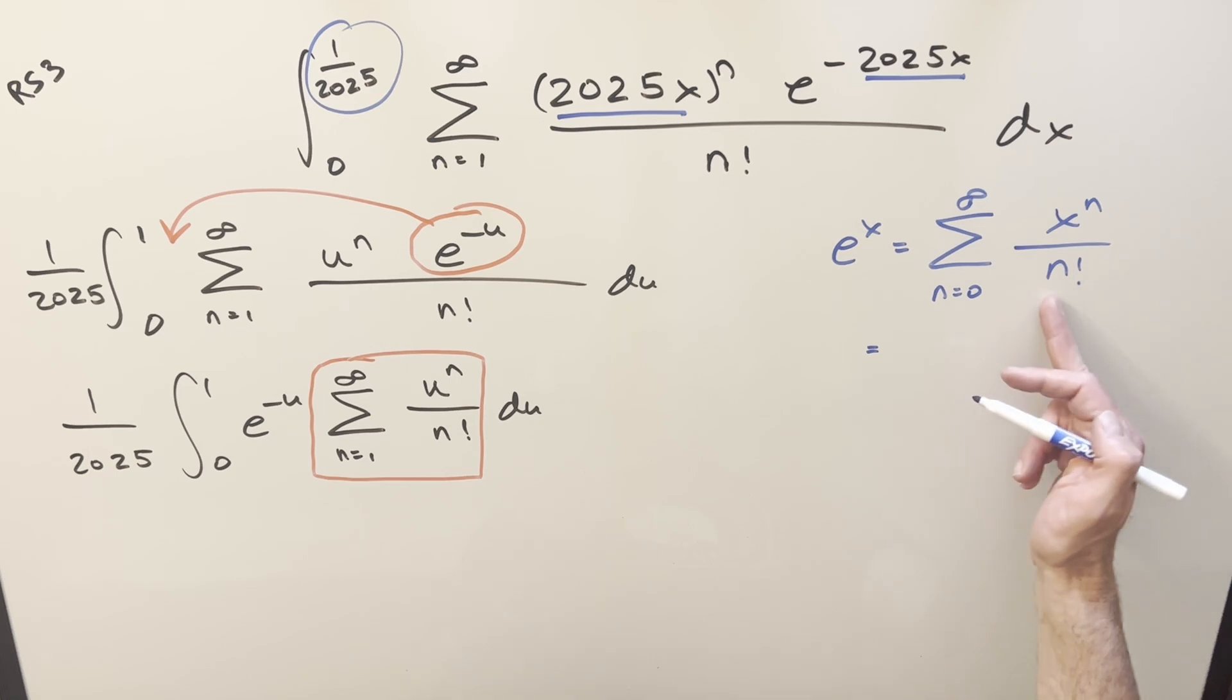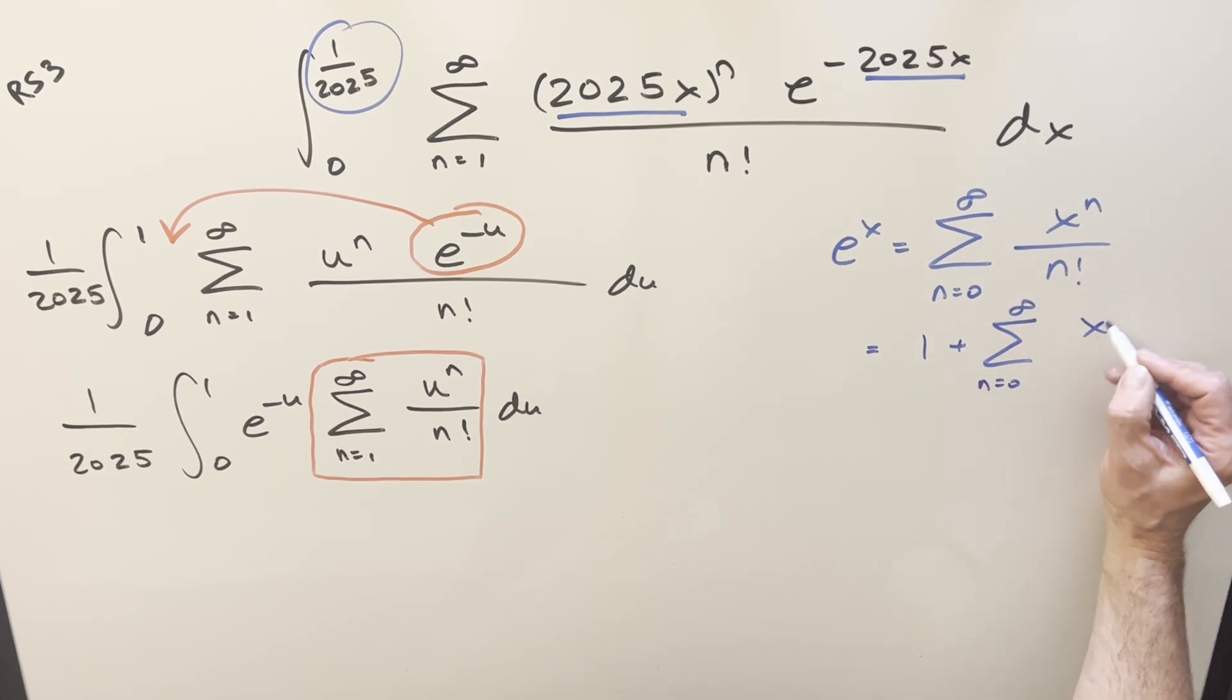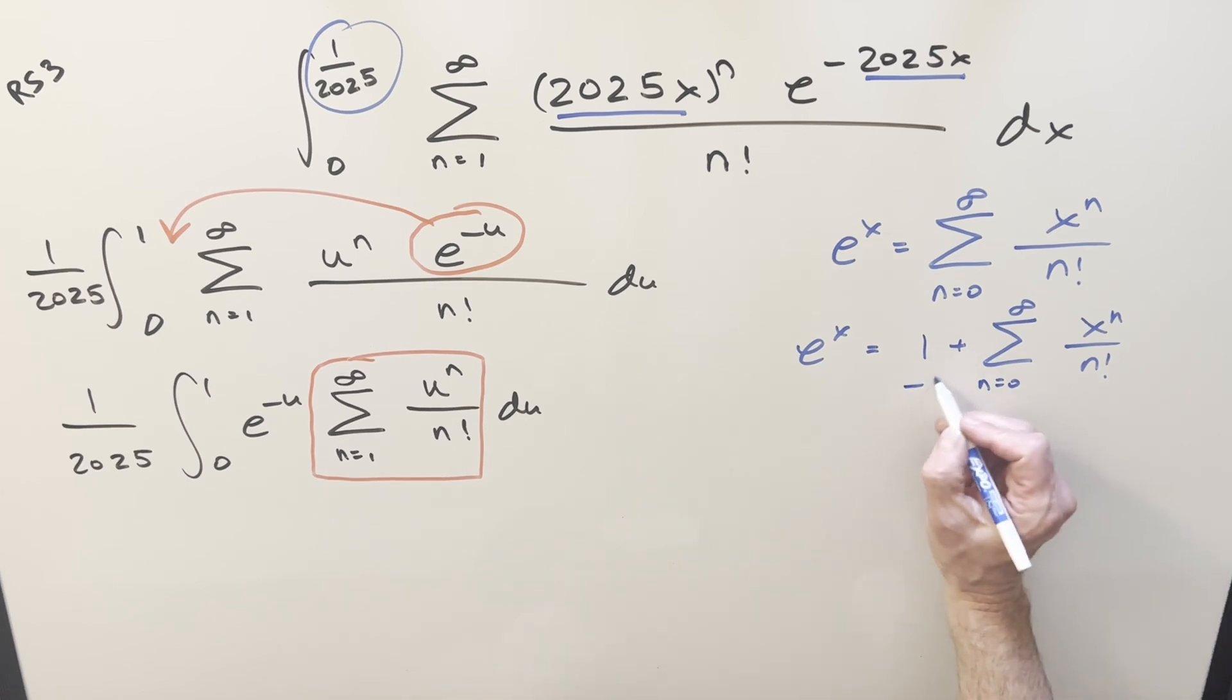X to the zero is one. Zero factorial is one. So I can write this as one plus the sum n equals zero to infinity of this stuff. And then to match it with what we have here, let's just subtract off the one, subtract off one. And so we can say for this sum, this thing is just going to be e to the x minus one.